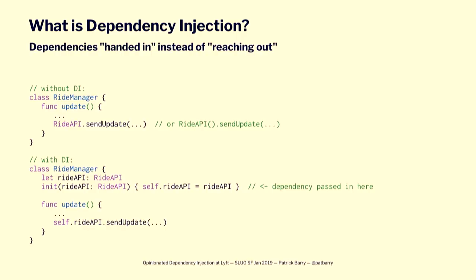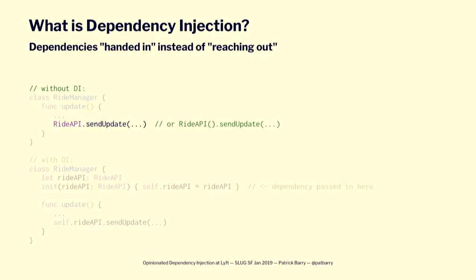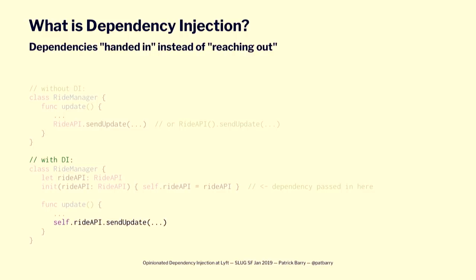This one slide is all you ever need to know about dependency injection — we could all go home after this. What is dependency injection? In short, dependencies are handed in instead of reaching out for them. Normally you might write code where your ride manager is just grabbing some ride API singleton, or instantiating its own object and using it. The only change with dependency injection is instead of reaching out, someone hands it in to you — you pass in a ride API object, assign it to a property, and use it. That's the whole thing.